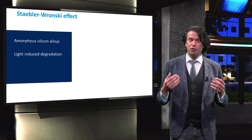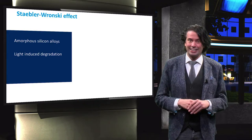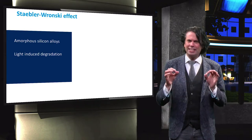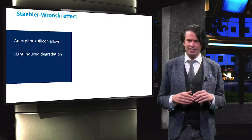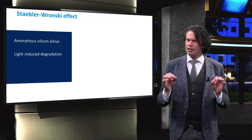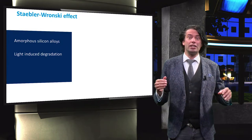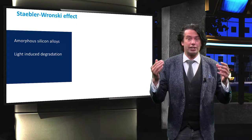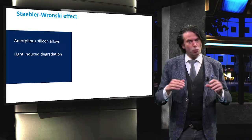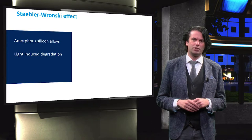Because of the recombination of light-excited charge carriers, metastable defects are created in the absorber layers. The increased defect density leads to increased charge carrier recombination in the absorber, which degrades the performance of the cell.